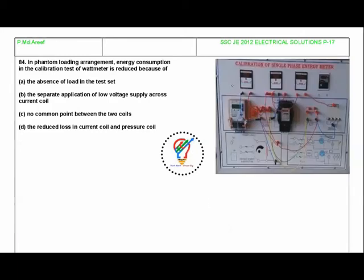As you can see here, when you are doing calibration of single phase energy meter, there is no direct load connected here. No load is connected to the energy meter, so the energy consumption is less because there is no load. The answer is absence of load in the test set.